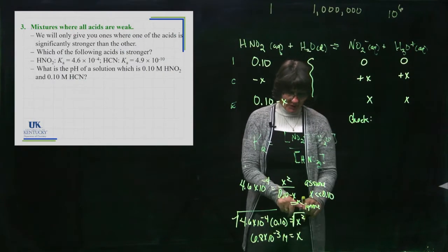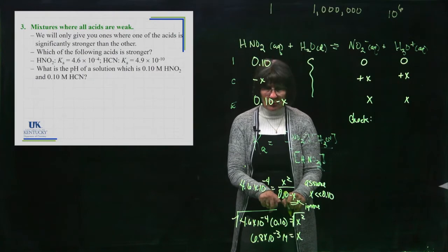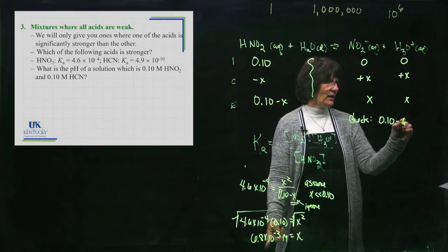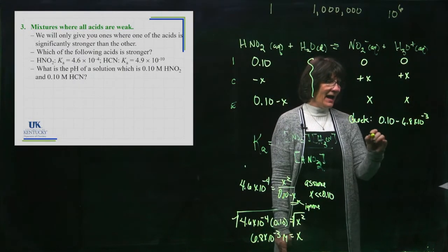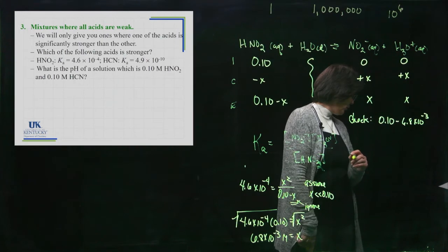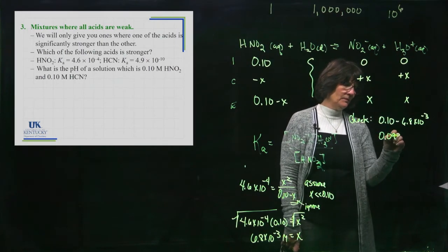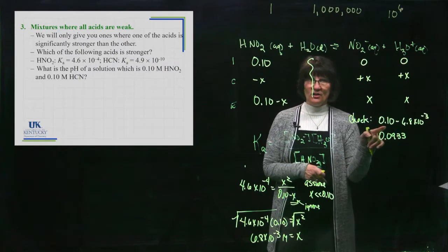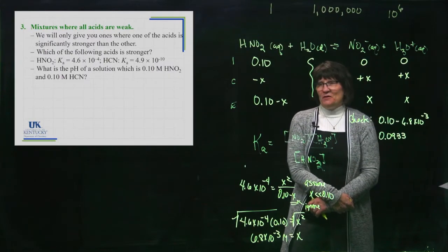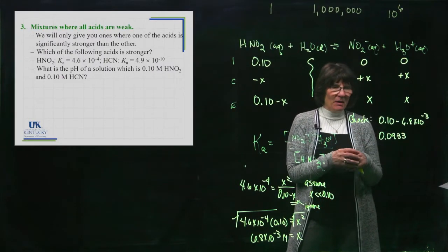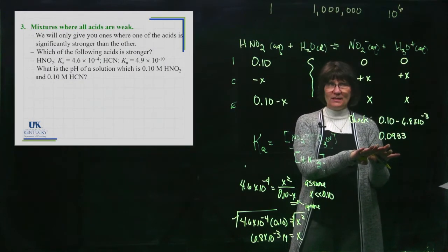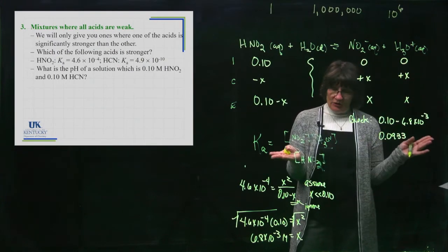We're going to check the assumption. What I assumed is that X is so small that when I subtract it from 0.10, it does not change the value. Let's see if that's true. When I take 0.10 and subtract 6.8 times 10 to the minus 3, I actually do change the number. It changes to the value of 0.0933. That changed, so this was significant. The assumption wasn't great.